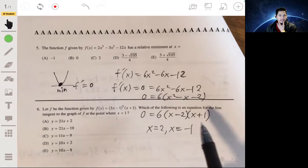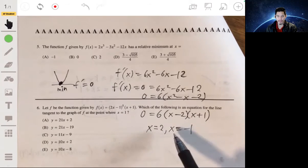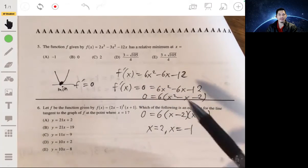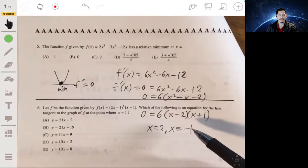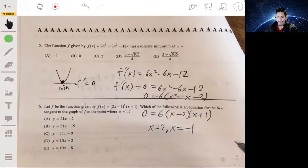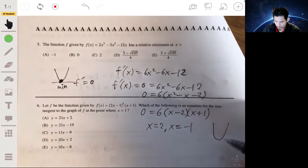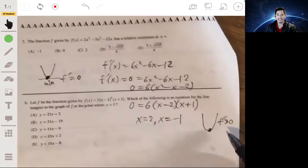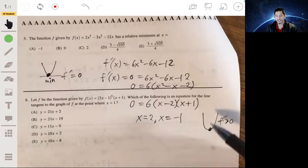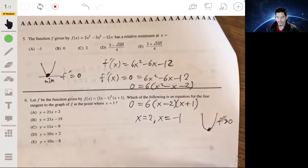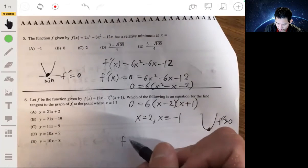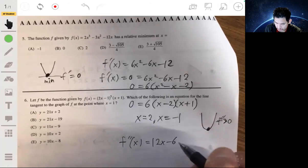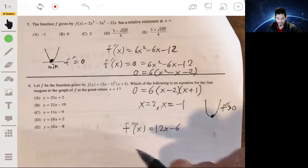Now we want to study the behavior of the graph at each of these points. So what you can do is take the second derivative and evaluate it for x equals 2 and for x equals negative 1. And if the second derivative is positive, that means the graph would be concave up. If f double prime is positive, that lets you know it has a relative minimum there because it's concave up at that point. So taking the second derivative, f double prime of x would be 12x minus 6.